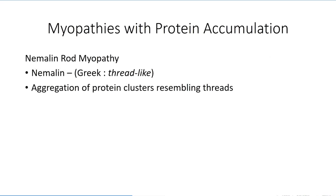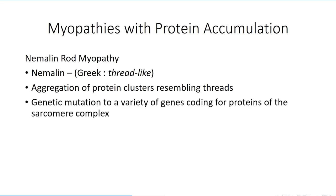One of the most prevalent classes of protein accumulation myopathy is nemaline rod myopathy. The name is derived from a Greek term meaning thread-like, which describes aggregates of thread-like protein polymerization within the cytoplasm. A number of genetic mutations can lead to this type of manifestation, the most common being a mutation to the NEB gene, found on the long arm of chromosome 2. This codes for nebulin, a protein associated with the thin filament of the sarcomere, which serves as a scaffolding protein for the myofibril and regulates the standardized length of each sarcomere.